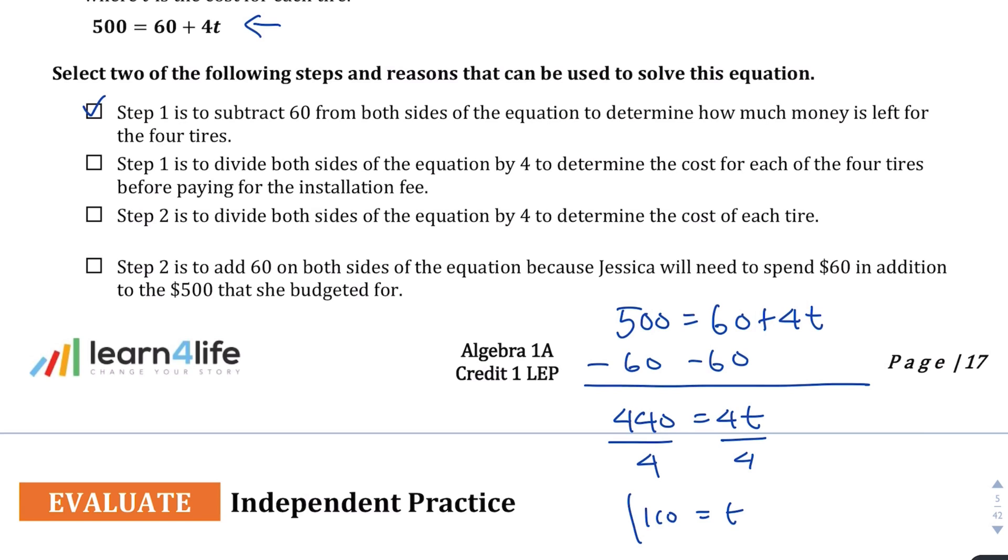The next following step is step 2 is to divide both sides of the equation by 4 to determine the cost of each tire. So let's take a look at the last one. Step 2 is to add 60 on both sides of the equation because Jessica will need to spend $60 in addition. Yeah, that's just plain wrong because you're not adding 60. So this seems like it's the best choice there.